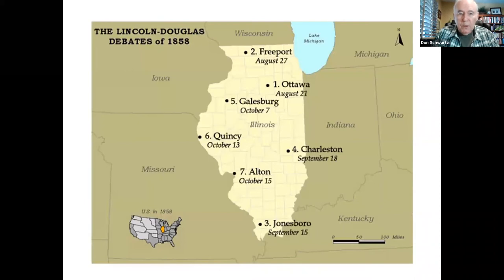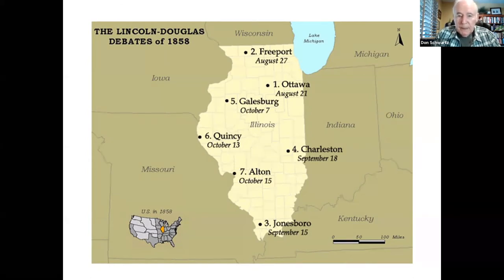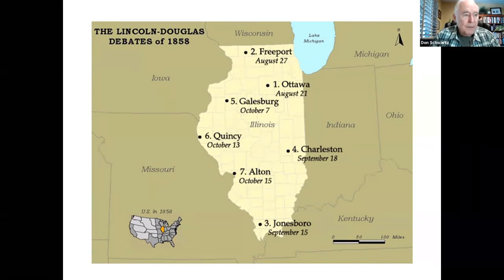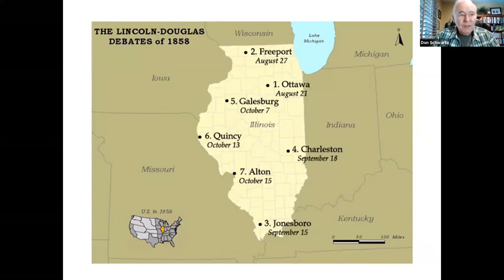Before the 17th Amendment, state legislatures elected senators, and so the Illinois state legislature elected Stephen Douglas. It seemed as if Lincoln's brief political career was over. But as the 1860 elections loomed, some Republicans began to think of Lincoln as a possible candidate. More and more people began to encourage Lincoln to run, and he even conceded, quote, 'the taste is in my mouth a little' — meaning the taste for political office.